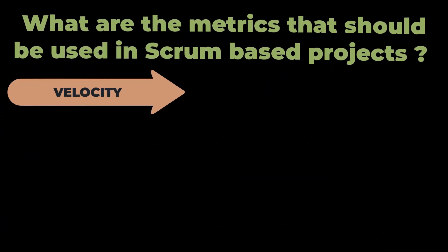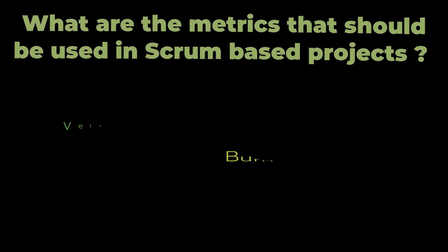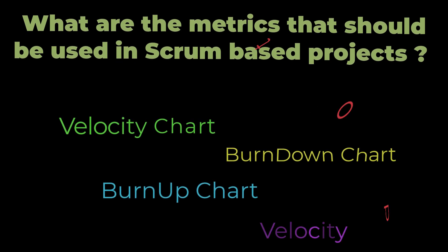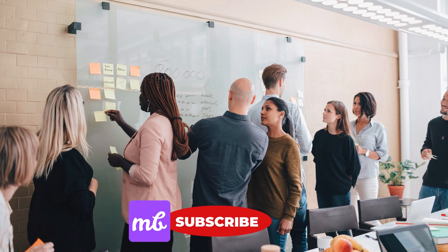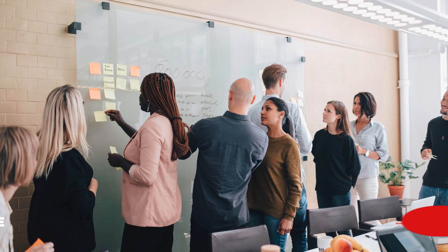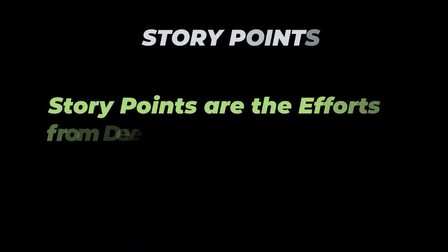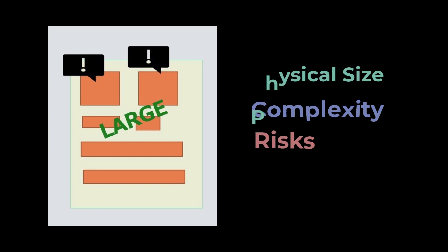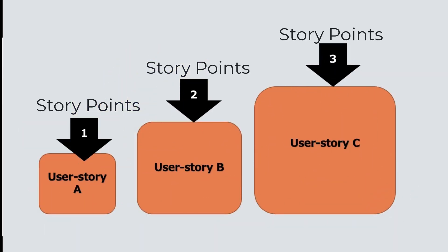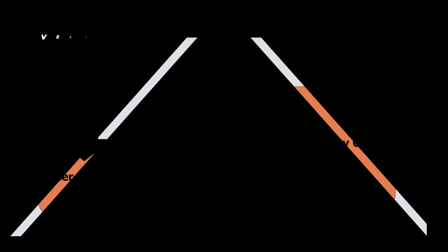We will be discussing velocity, velocity charts, burndown charts, and burn up charts. Before starting our major topics, let's talk a little about story points. Every team needs a unit of measurement to measure how big or complex a particular work is, so that they can determine estimates for that work. Story points are efforts from the development team's perspective to fully implement a particular piece of work. Story points measure the size of a product backlog item, defined by factors like how big the work is, the complexity, physical size, and the risks involved. Story points are the relative units of measure required to say that a work item is done.